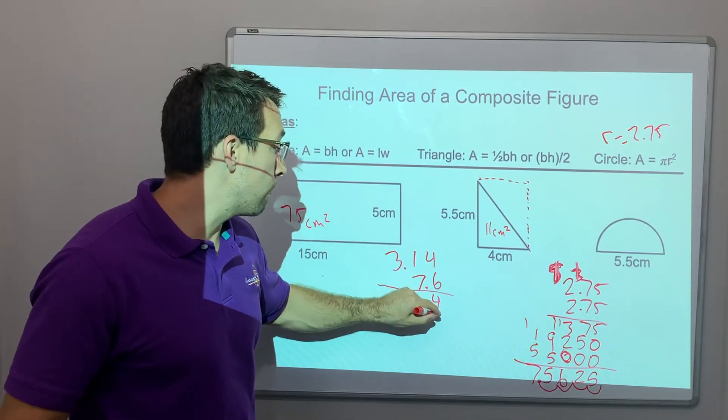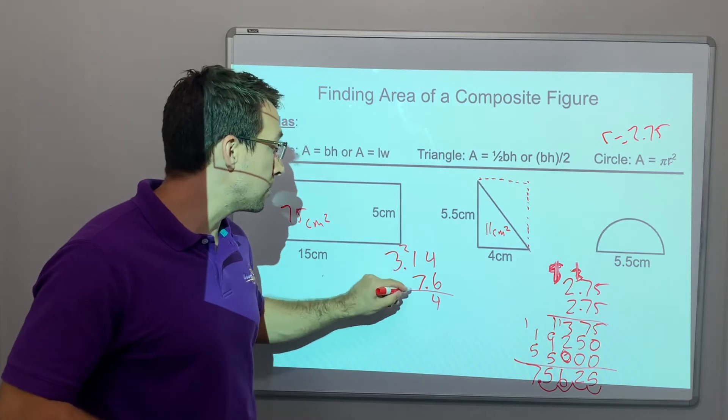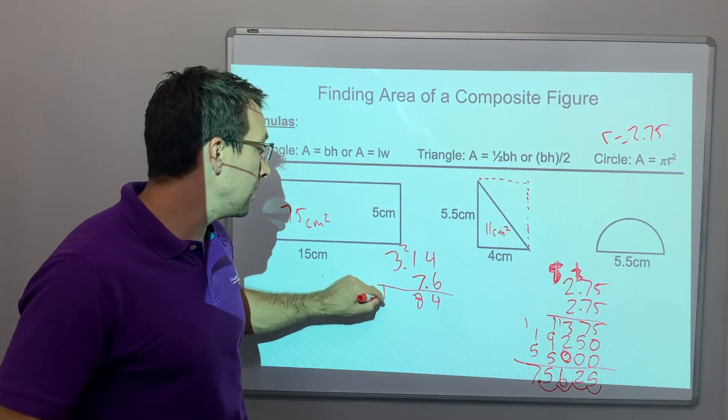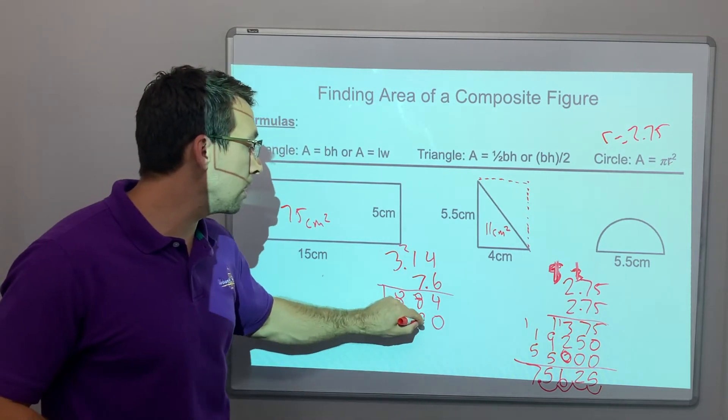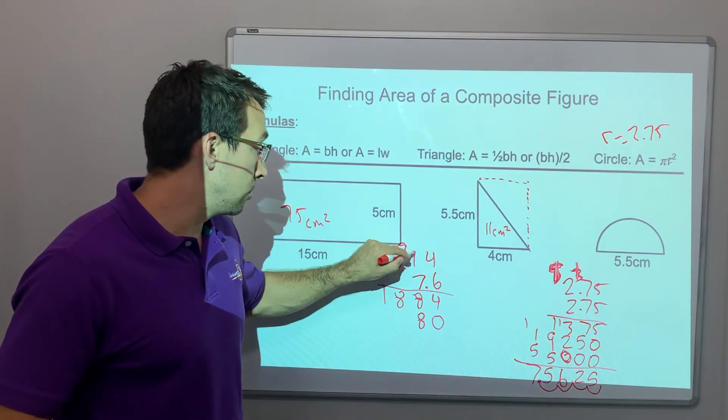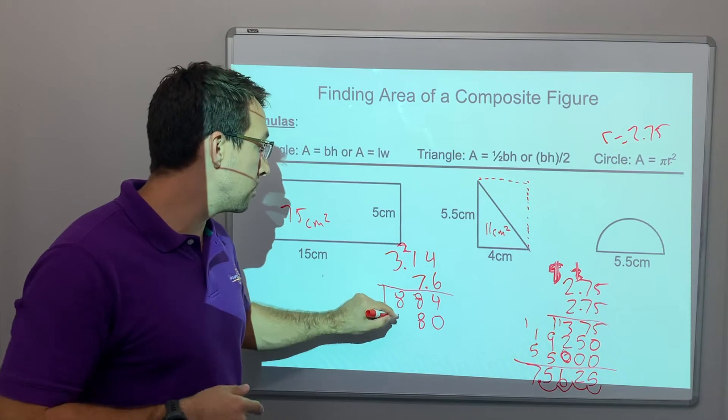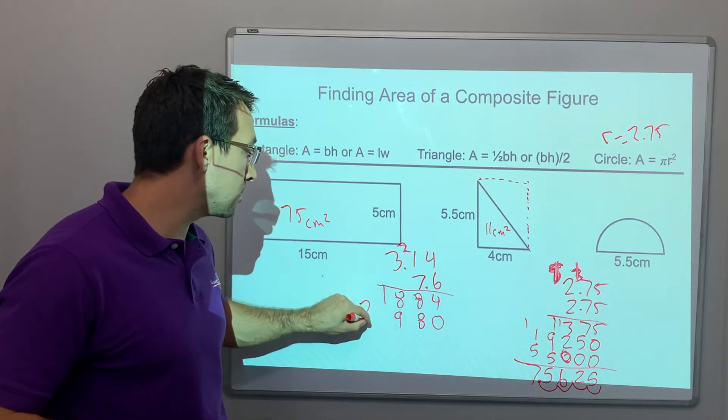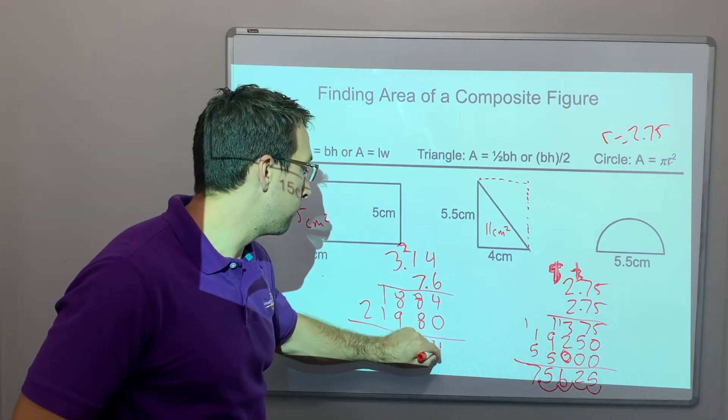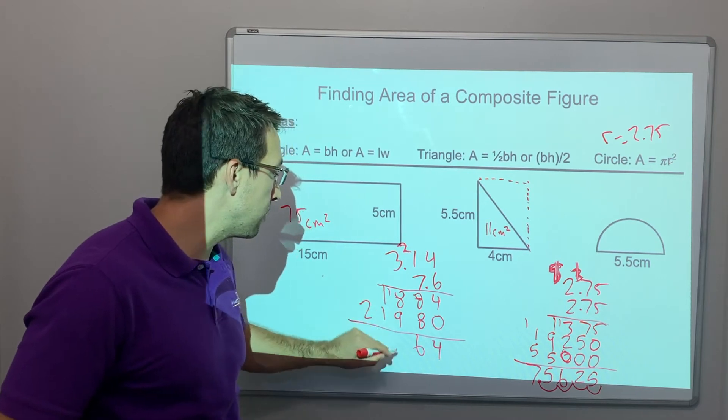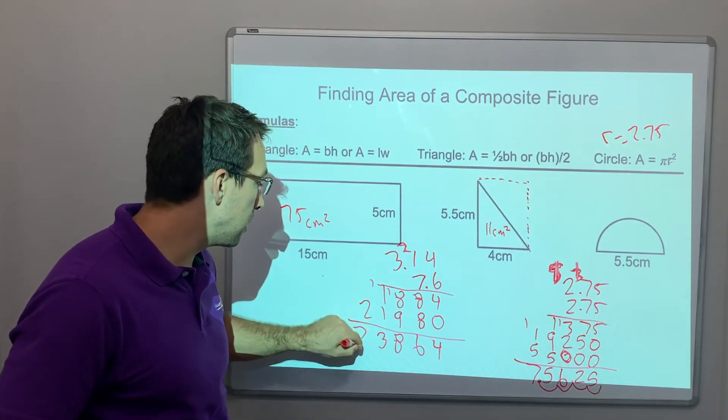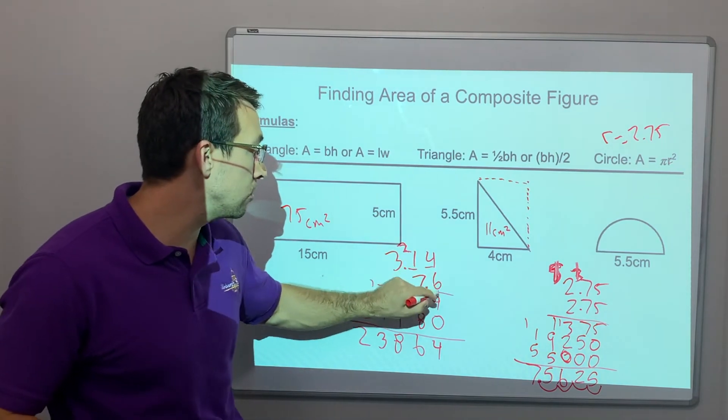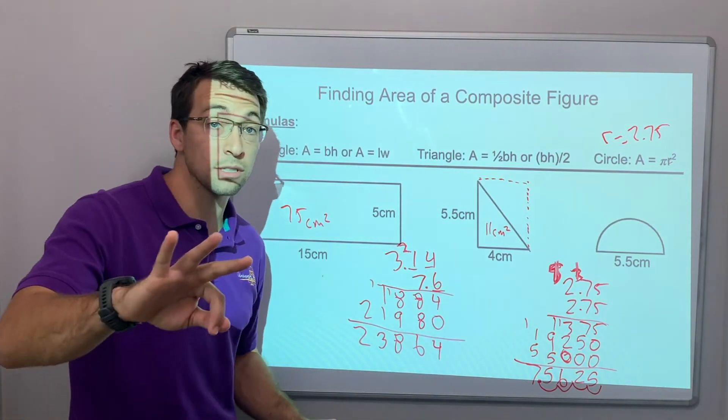6 times 4 is 24. 6 times 1 is 6, plus 2 is 8. 6 times 3 is 18. Start with our zeros. 7 times 4 is 28. 7 times 1 is 7, plus 2 is 9. 7 times 3 is 21. 4, 16. 9 plus 9 is 18. 1 plus 1 plus 1 is 3. 2. And there's 3, 1, 2, 3 decimals. There's 3 decimals in the problem.